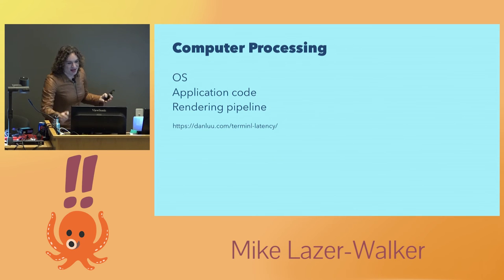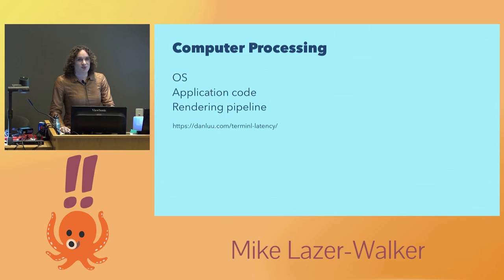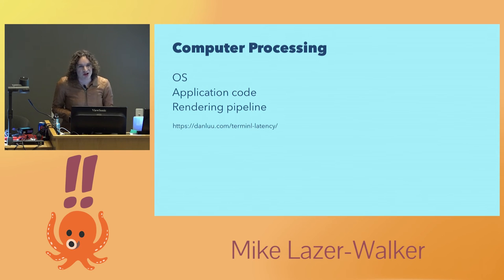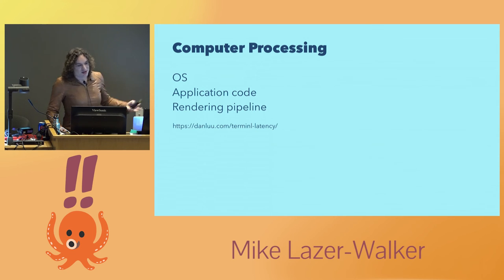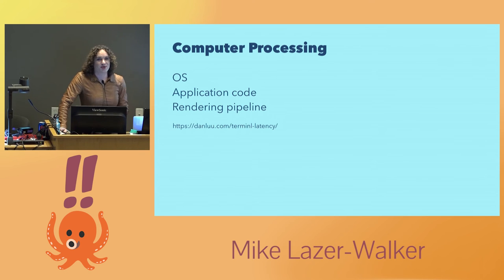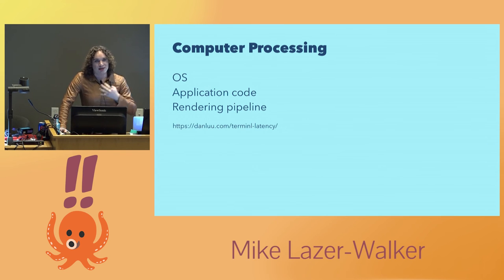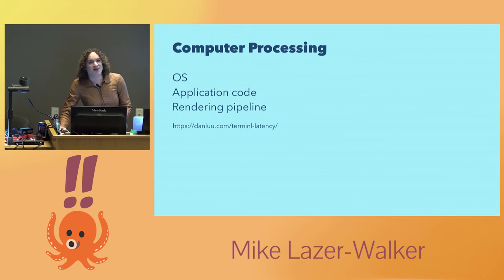Once the signal gets into the computer, things get fuzzier and harder to measure. Some rendering pipeline stuff is pretty straightforward — your window manager might do compositing that takes extra time, and GPU buffering can add time. But that's simpler than the intersection of the operating system and your application code. Dan Liu also wrote a blog post looking at how long different terminals on macOS take to respond to keyboard commands using the same 240 frames-per-second camera setup. A key finding was not just how long it takes to work, but how long it takes under different CPU loads — different operating systems have different strategies for managing CPU load and allocating processing time.